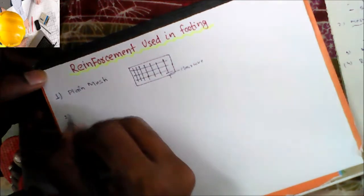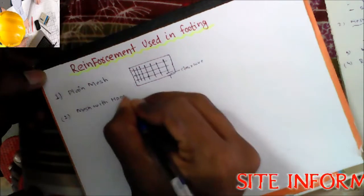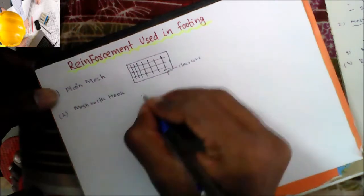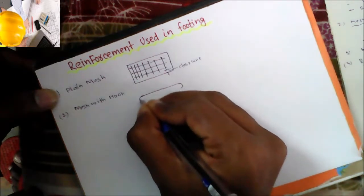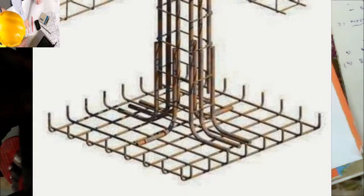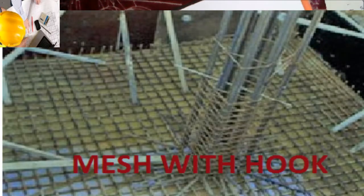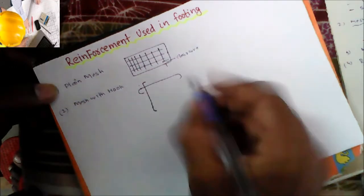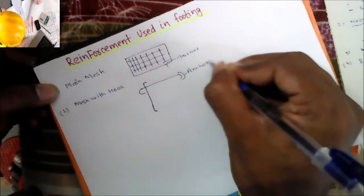Another type of mesh is mesh with hook. It is the same as the plain mesh but with one change: a hook is provided on the x direction bar, and similarly in the y direction a hook is provided. This is a mesh with hook, and it is generally provided in low rise and high rise buildings — we call this anchorage.